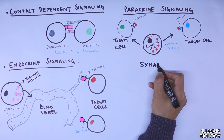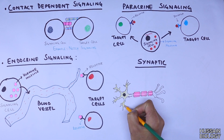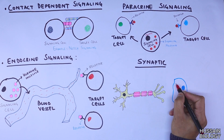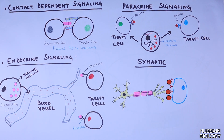Finally, we have synaptic signaling, in which the signaling cell is the nerve cell or neuron, and in close proximity we have the target cell with receptors. When there is an action potential within the nerve cell, it drives the expulsion of neurotransmitters. These neurotransmitters are then received by the receptors of the target cell, driving the signaling pathway forward. The neurotransmitters are secreted at the axon terminal and received by the cell via its receptors.